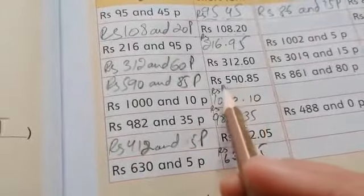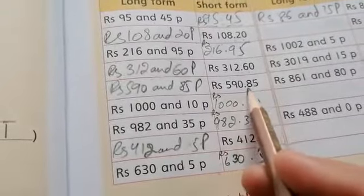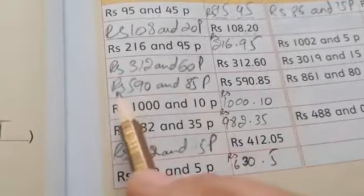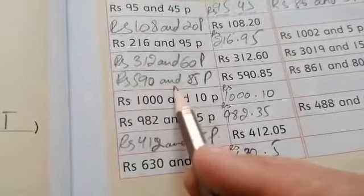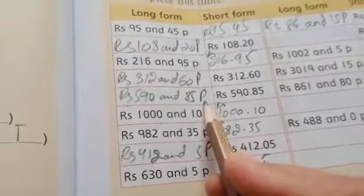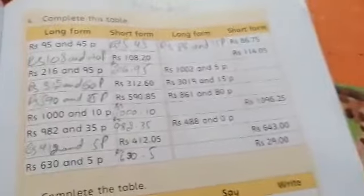One more. Rupees 590.85. It means Rupees 590 and 85 paisa. Now complete the table.